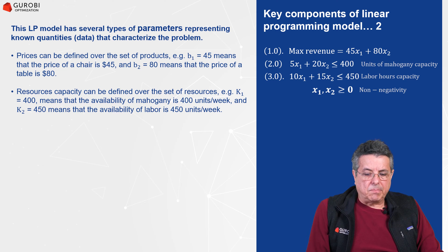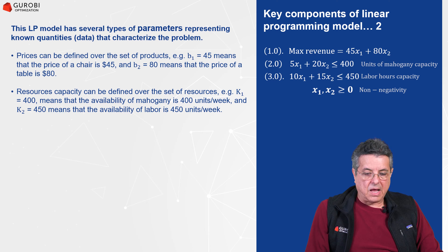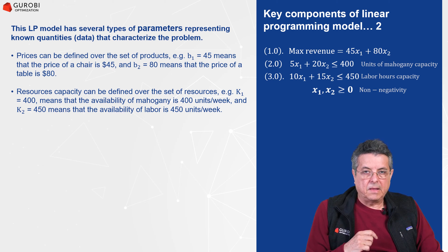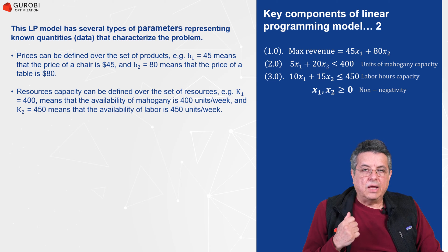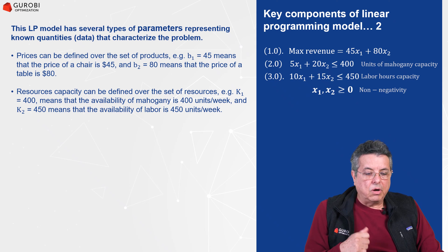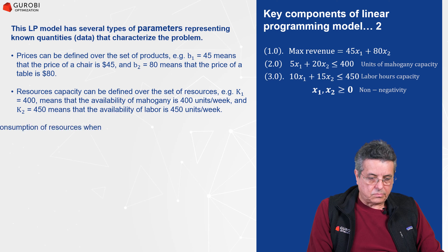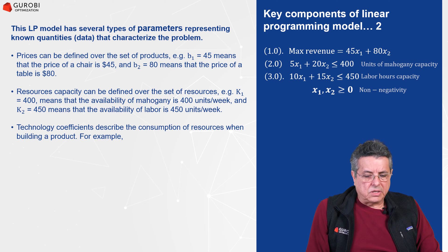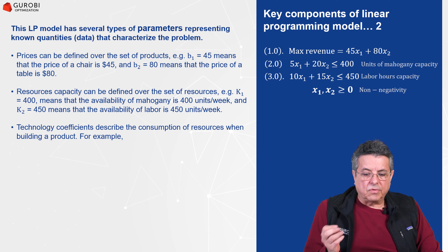For resource capacity, we use two parameters. K1 represents the availability of Mahogany and equals 400 units, and K2 represents the amount of labor available, equal to 450 hours. We also have another type of parameter called technology coefficients, which describe the consumption of resources when a product is built.